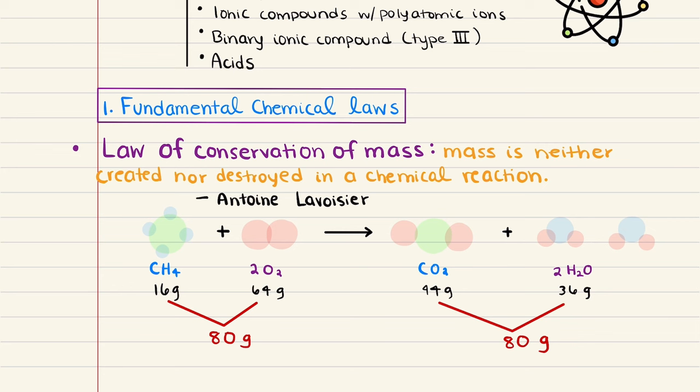They asked whether matter is continuous and whether it was infinitely divisible into smaller pieces. They had no experiments that supported their claims, but they had these questions and ideas. The next 2,000 years of chemical history were dominated by a pseudoscience called alchemy. Some alchemists were fakes obsessed with turning cheap metal into gold, but many were serious scientists. The alchemists discovered several elements and learned to prepare mineral acids.